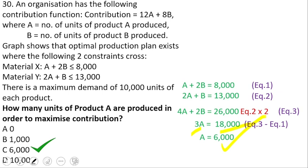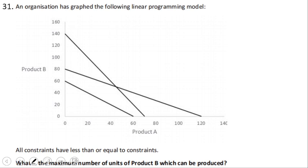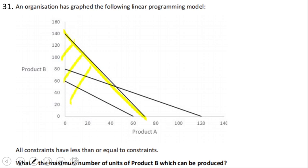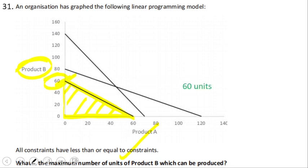Next question: an organization has graphed a linear programming model with all less-than-or-equal-to constraints. For each constraint, the feasible production plan must lie below the constraint line. The common feasible region satisfying all three constraints is a triangle. The question asks for the maximum units of product B that can be produced within the feasible region — the maximum point on the B-axis within the feasible region is 60 units. The right answer is 60 units.